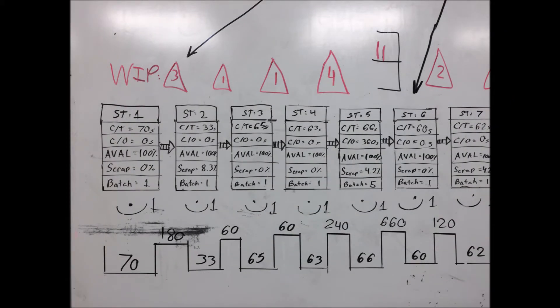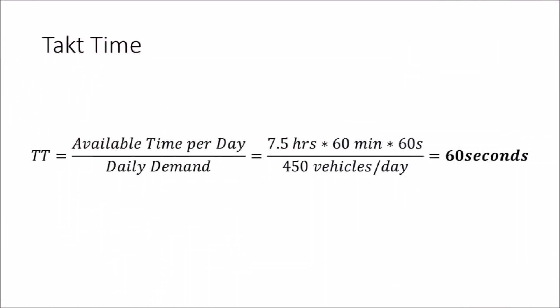Step 6: Lead Time. Start by drawing the processing time and takt time shape like shown in the example. Then use the customer daily demand and available time per day to calculate the takt time.